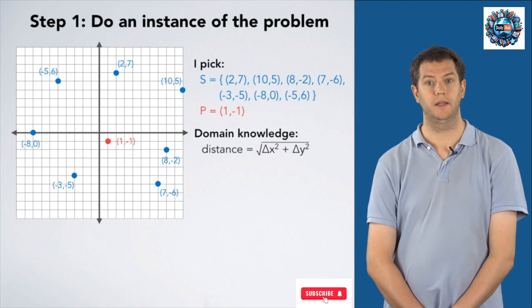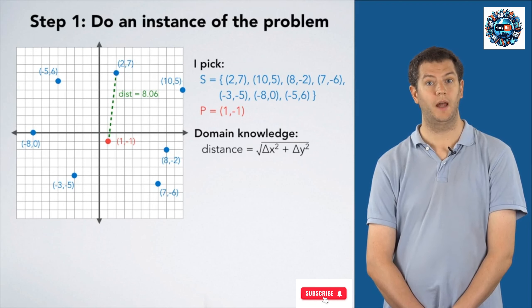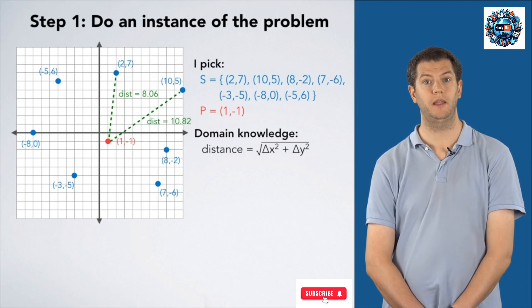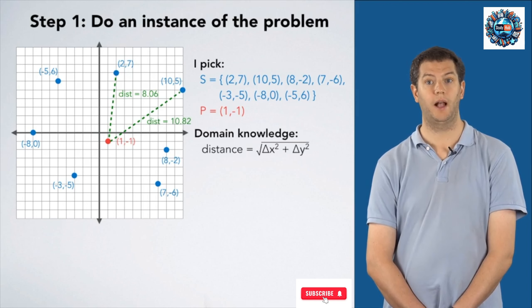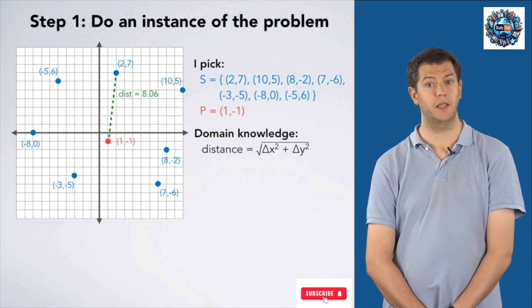So the way that I would do this is calculate the distance between p and (2,7), and I would come up with 8.06. Then, I would compute the distance between p and (10,5), and come up with 10.82. The first point was closer, so I'm going to keep that.